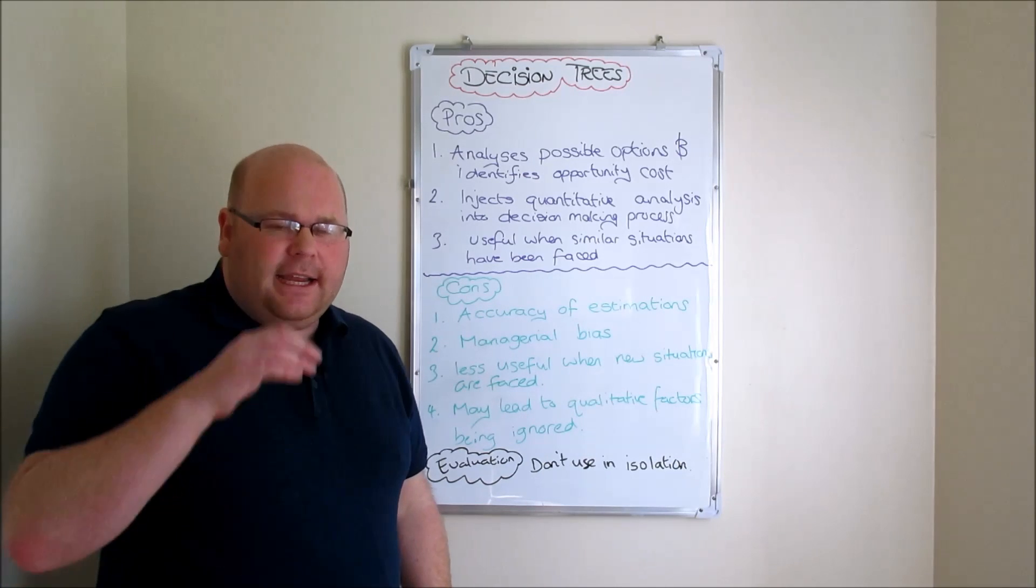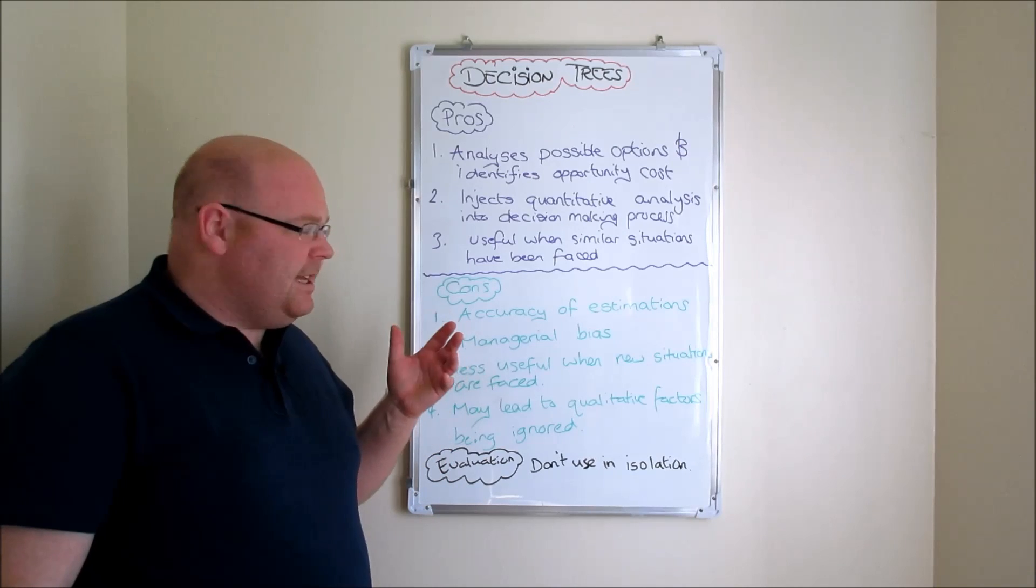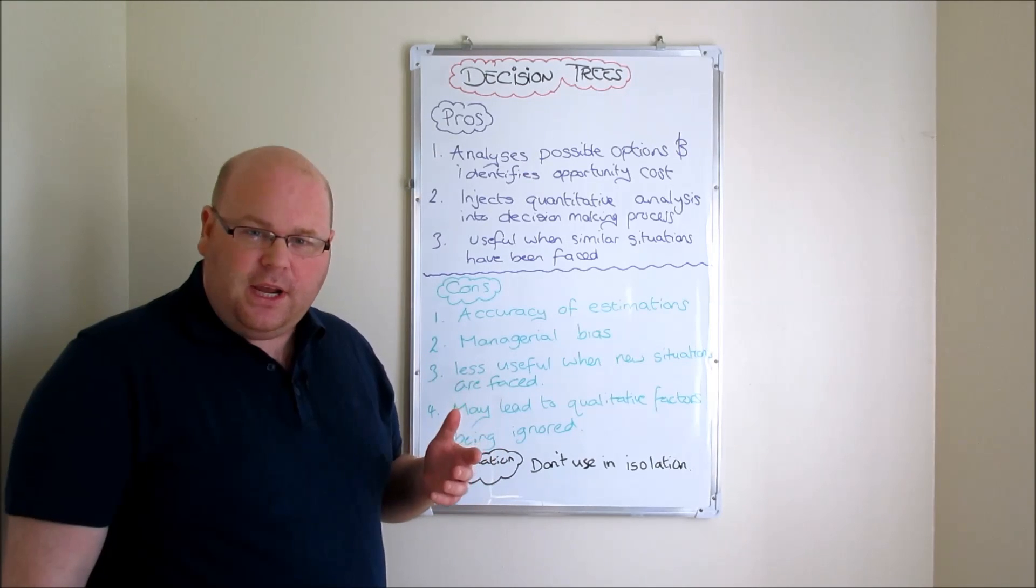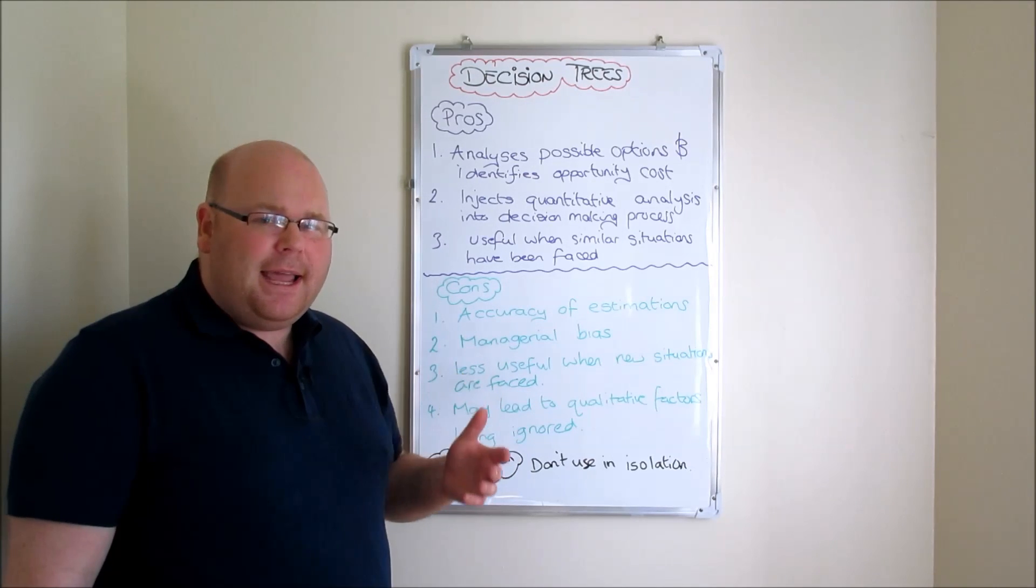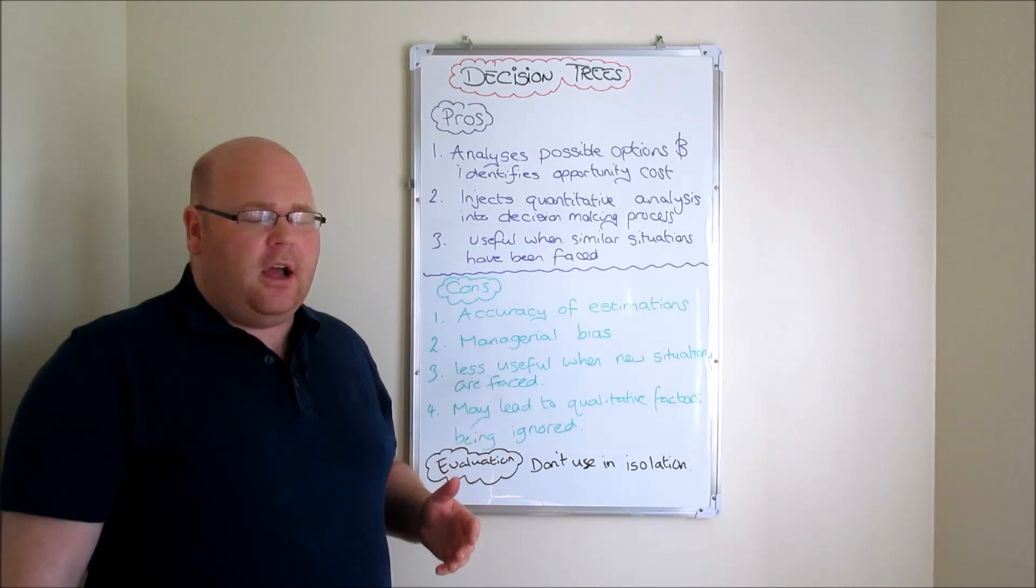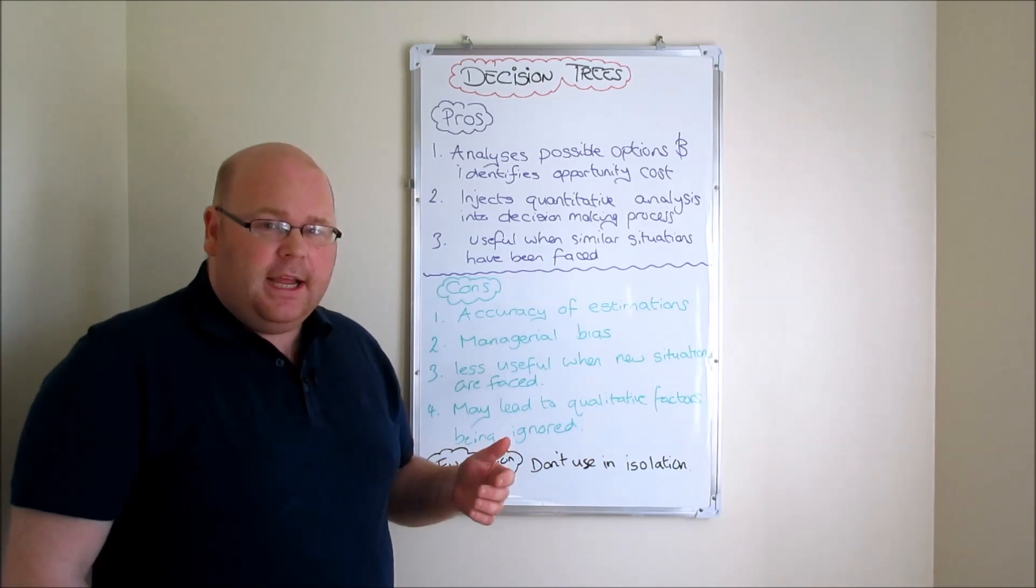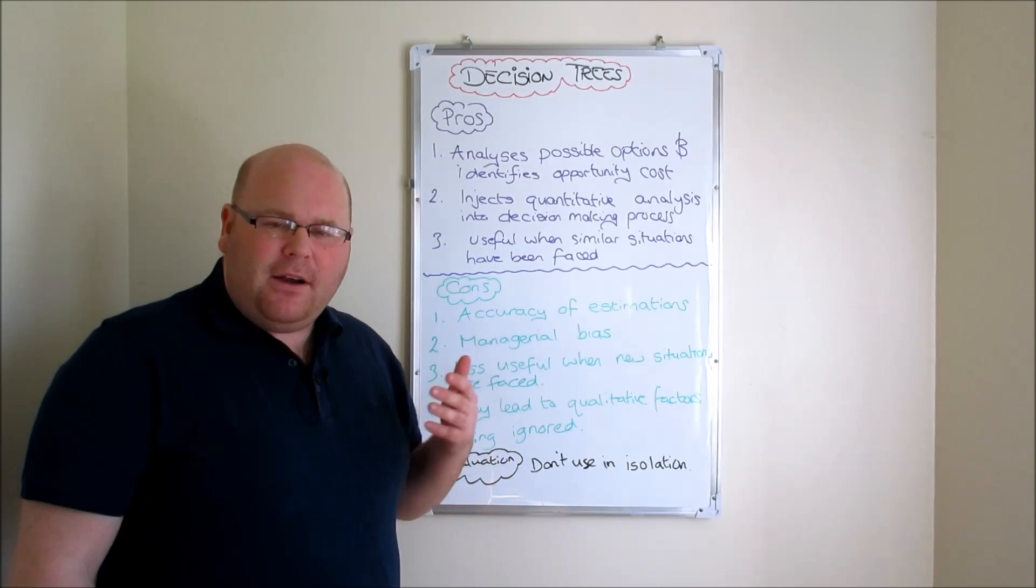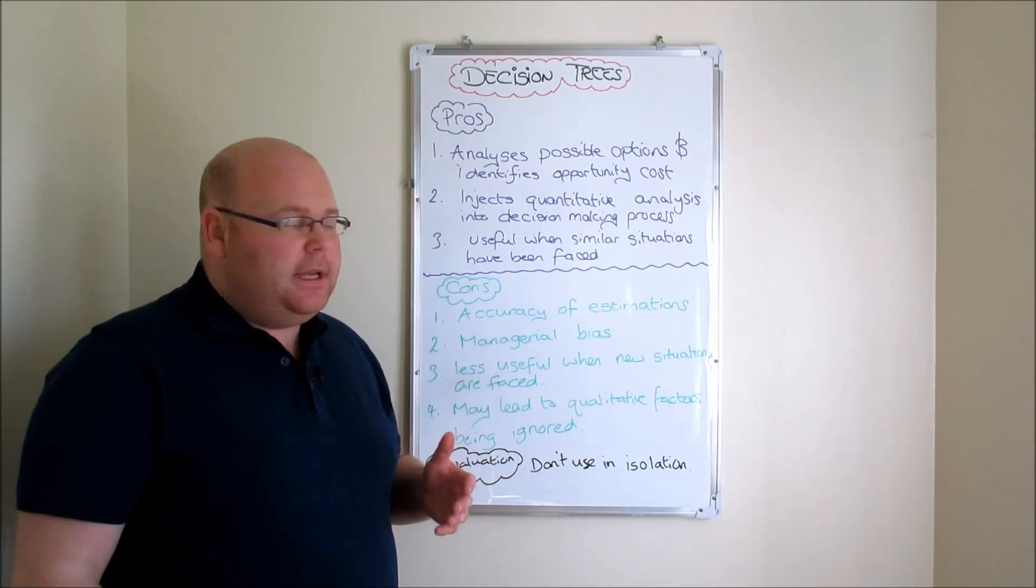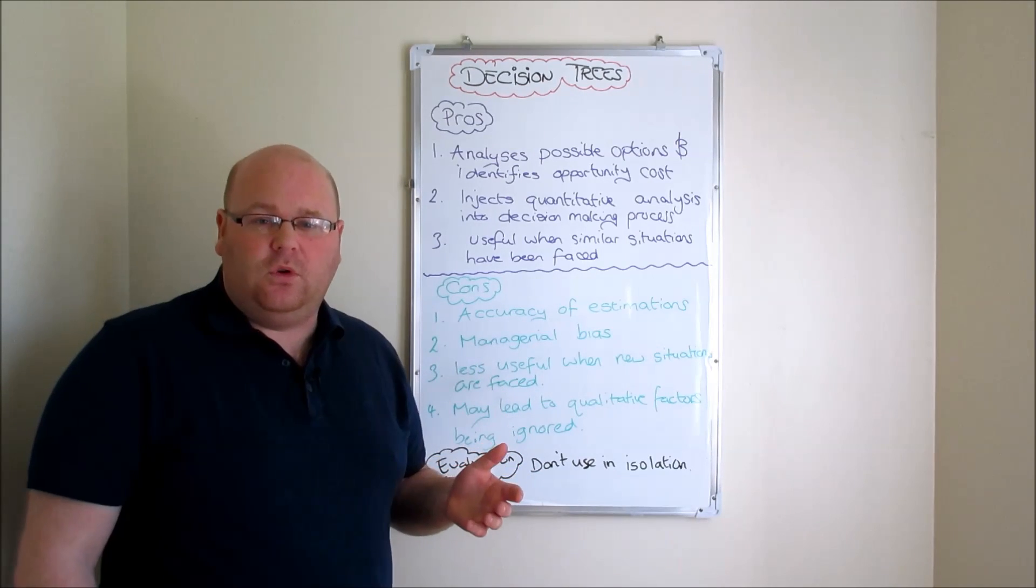What we could also say as a pro for decision trees is that they are at their most useful when we're constructing decision trees based on scenarios or situations that the business may have encountered in the past. So for example, if Apple were to be using a decision tree when launching the iPhone 8, they have already got a history of iPhone 1, 2, 3, 4, etc., so they will be able to make better estimations, better forecasts, better guesses at what the different values might be that they might put in their decision trees. And it makes the whole process more useful and a more tangible tool for them to use.